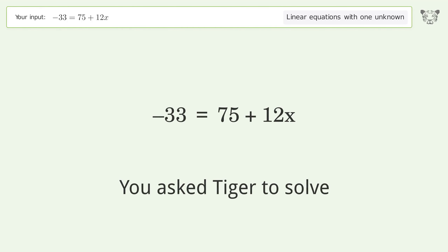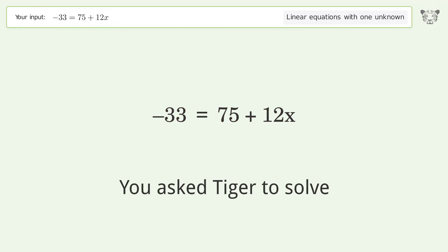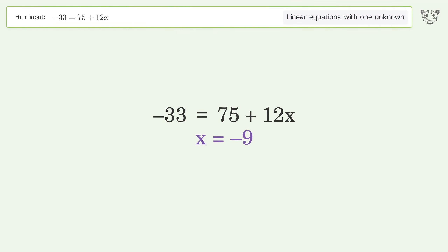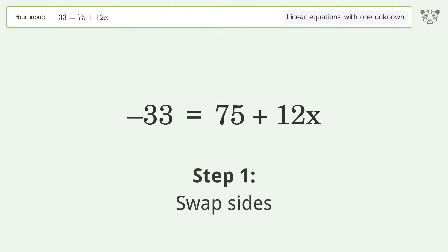Tiger Algebra is used to solve a linear equation with one unknown. The final result is x equals negative 9. Let's solve it step by step. First, swap sides.